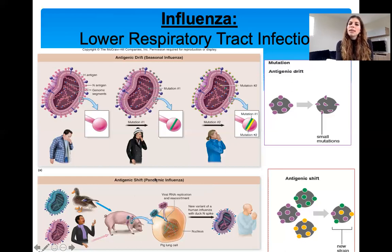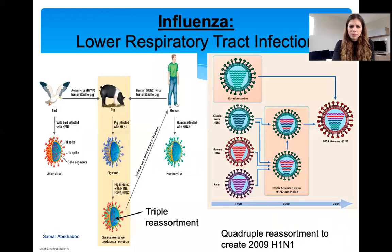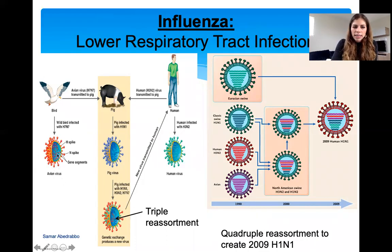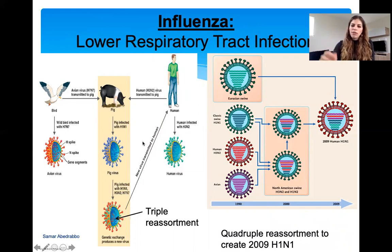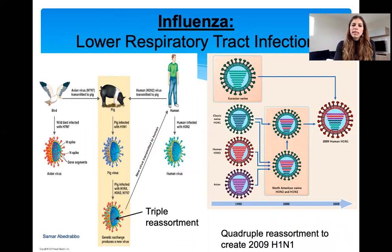With antigenic shift, we have no immunity — it's completely new — which is what leads to pandemics, similar to what we're seeing with COVID-19. The RNA segments of the virus assort so much that you see an antigenic shift. For example, if the virus infects a bird, it may transmit to a pig, mutate, and then infect a human — and in the human you see more mutations and more human-to-human transmission. This is what leads to so many different influenza strains.